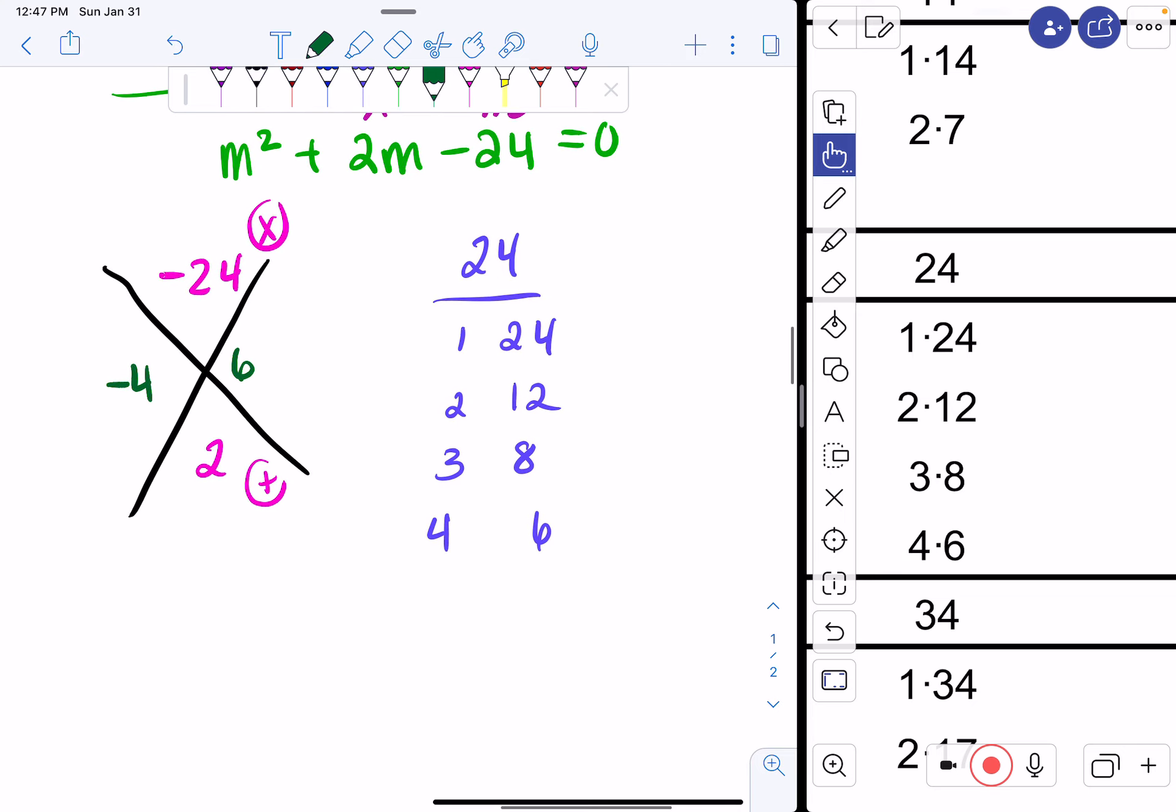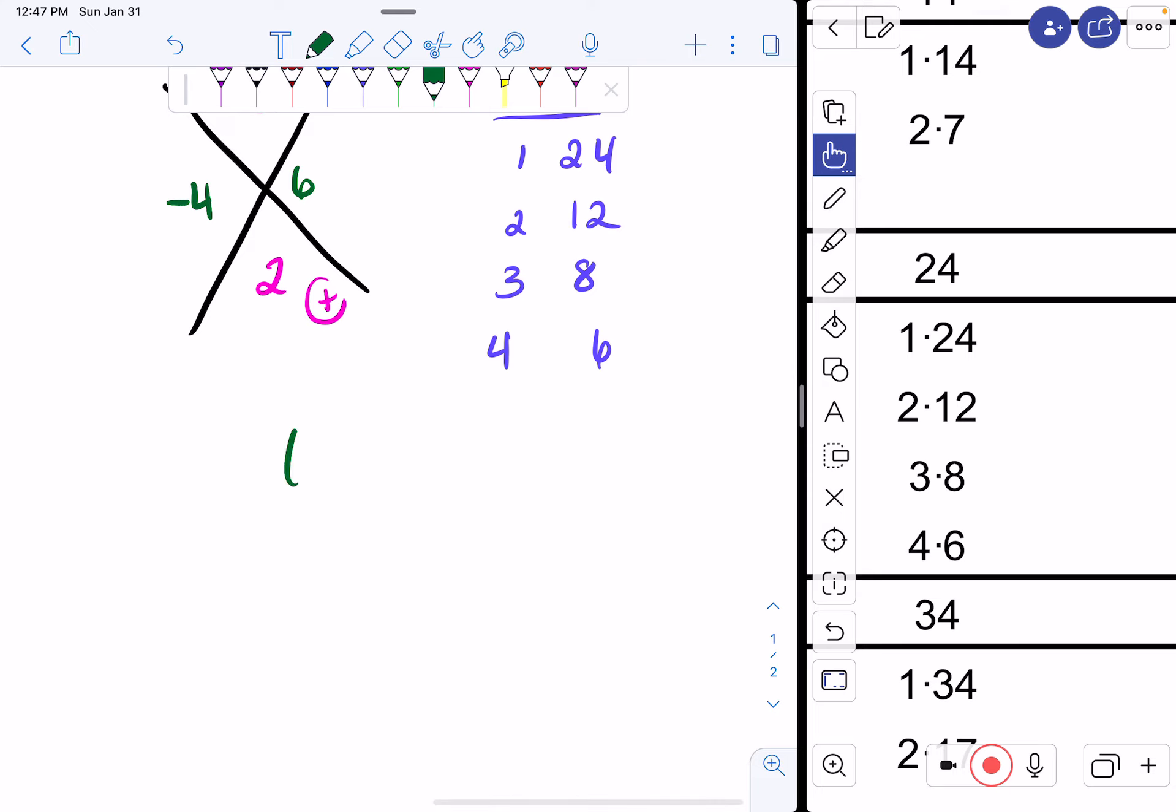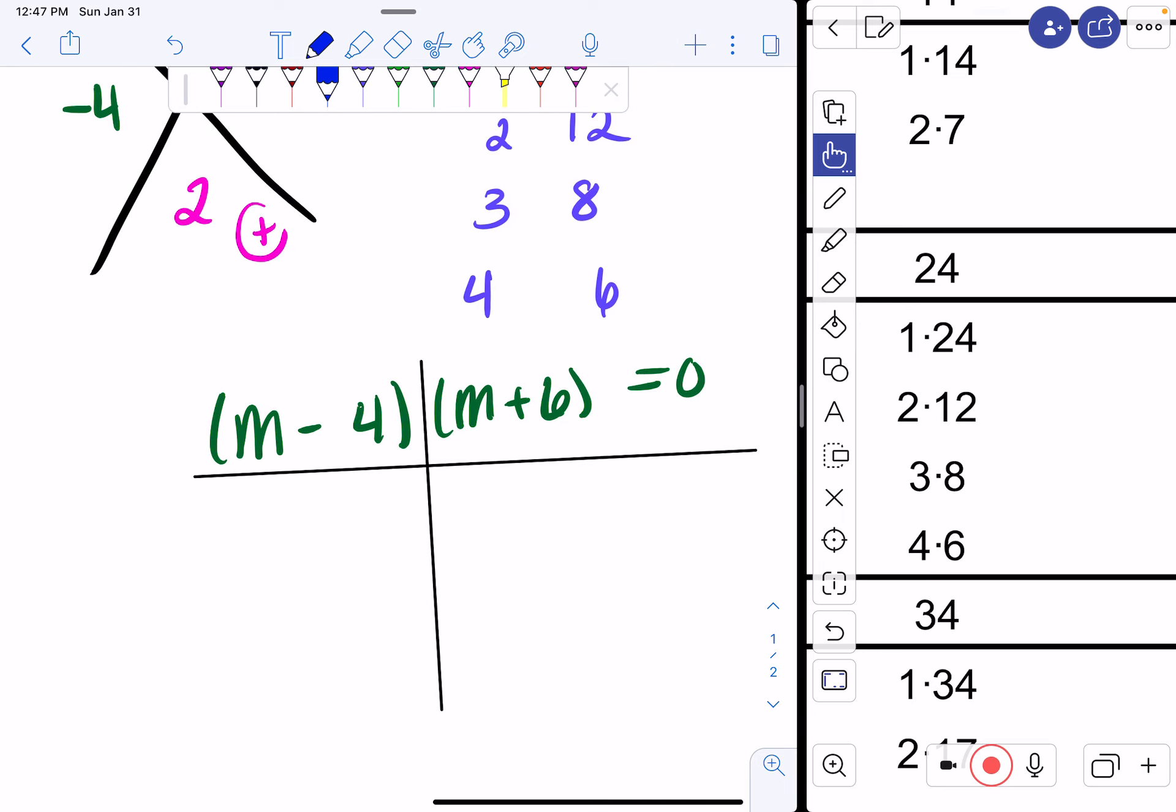So I can factor m squared plus 2m minus 24 to be m minus 4, m plus 6. And this is equal to 0. Now I do my t-time. And I have m minus 4 equal to 0, m plus 6 equal to 0.